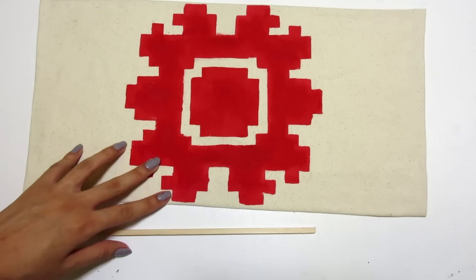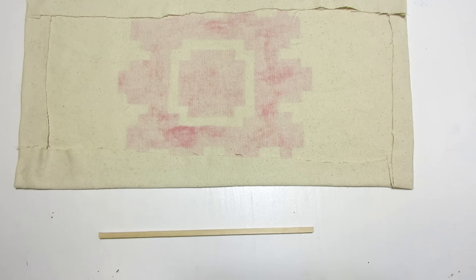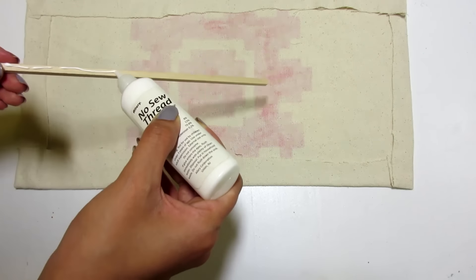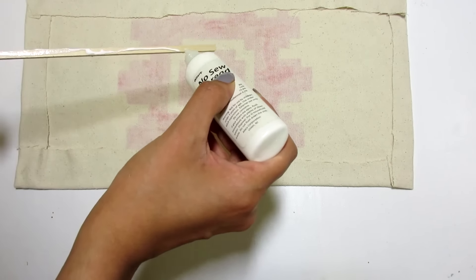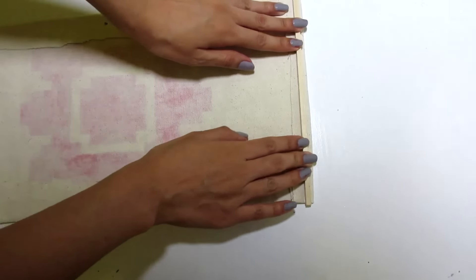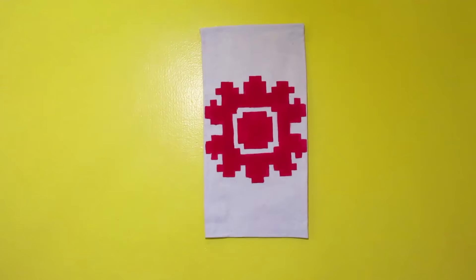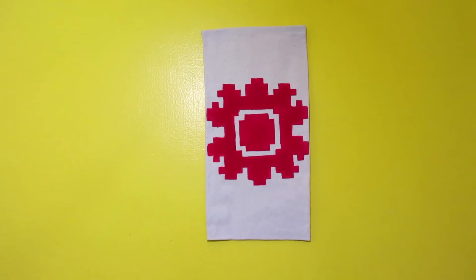Now that our banner is dry, we can go ahead and add our wooden strip. Flip your banner over to the back, add some glue to the stick, and place it at the top of the banner. Make sure you don't use too much glue because you don't want it to bleed through the fabric. So now you can go ahead and use the wooden strip to hang your banner on the wall. So here's what it should look like when it's all done.